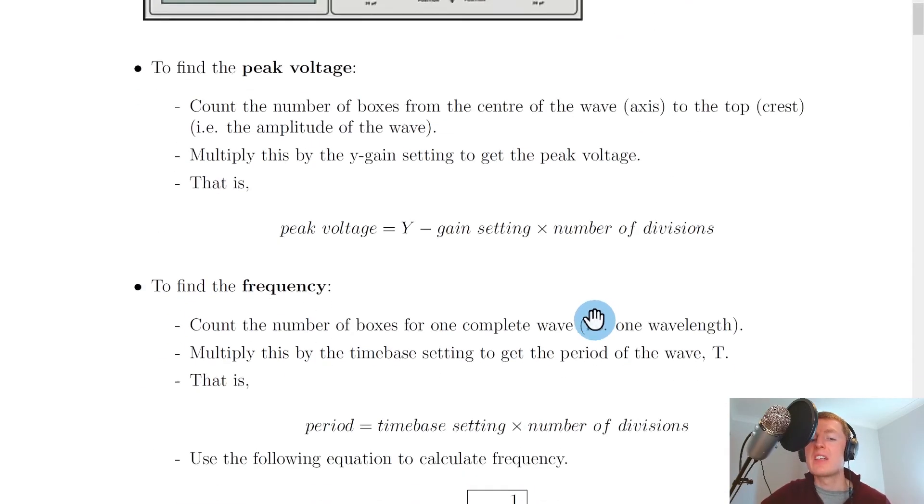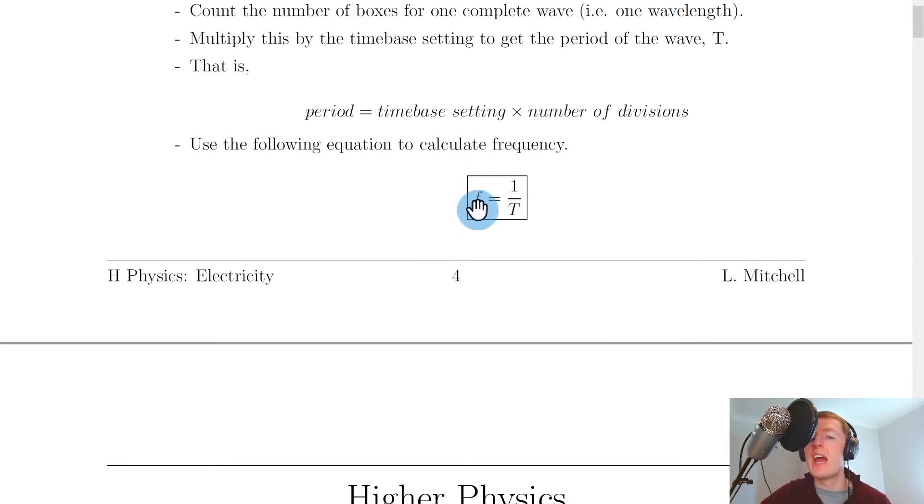Once I know my period, I can substitute that into the equation f equals 1 over T, which would be 1 over 8 milliseconds, giving me 1 over 8 times 10 to the minus 3, which would give me my frequency in this specific example.